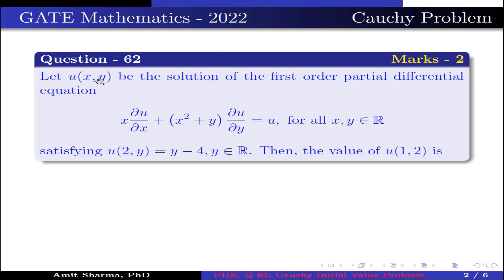The question is: let u be the solution of the first order partial differential equation x·(∂u/∂x) + (x² + y)·(∂u/∂y) = u, for all belonging to ℝ, satisfying u(2, y) = y − 4 where y belongs to ℝ. Then the value of u(1, 2) is?